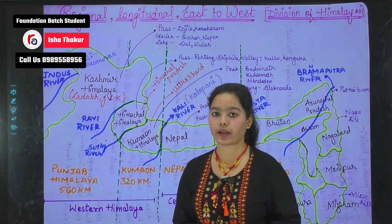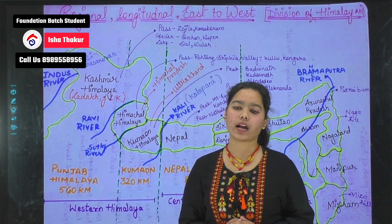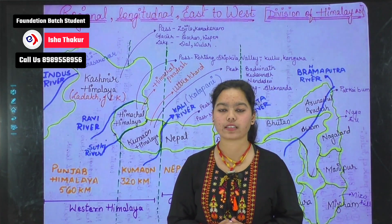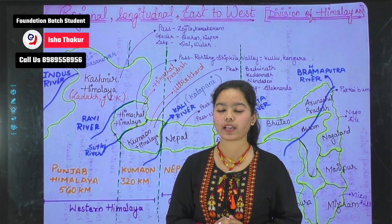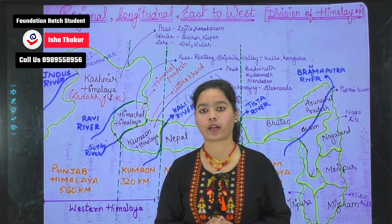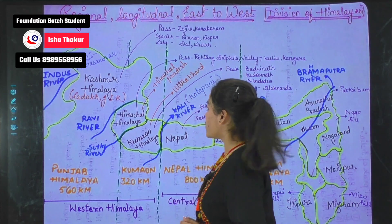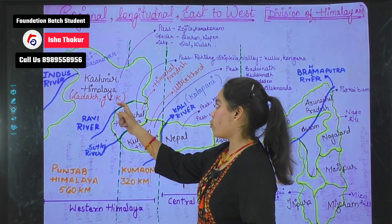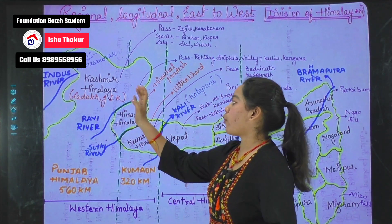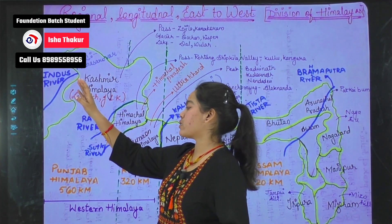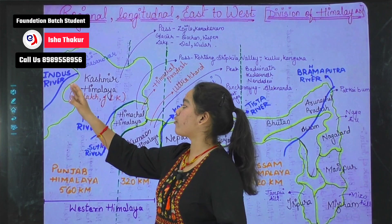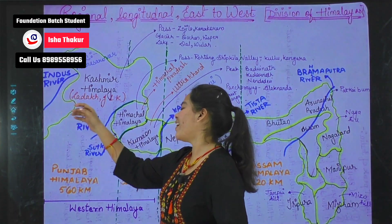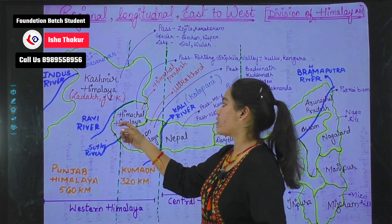Punjab Himalaya is subdivided into two parts: Kashmir Himalaya and Himachal Himalaya. Kashmir Himalaya includes Ladakh and Jammu Kashmir. It is situated from the Indus River in the west to the Ravi River in the east.